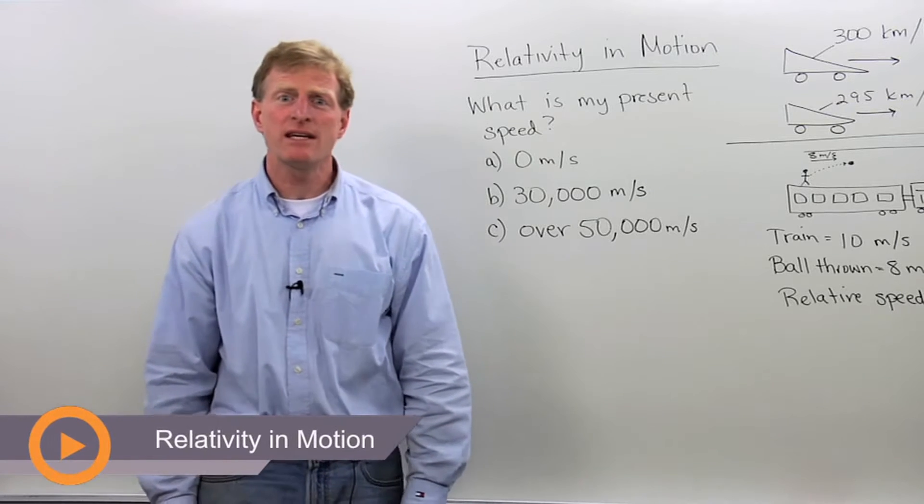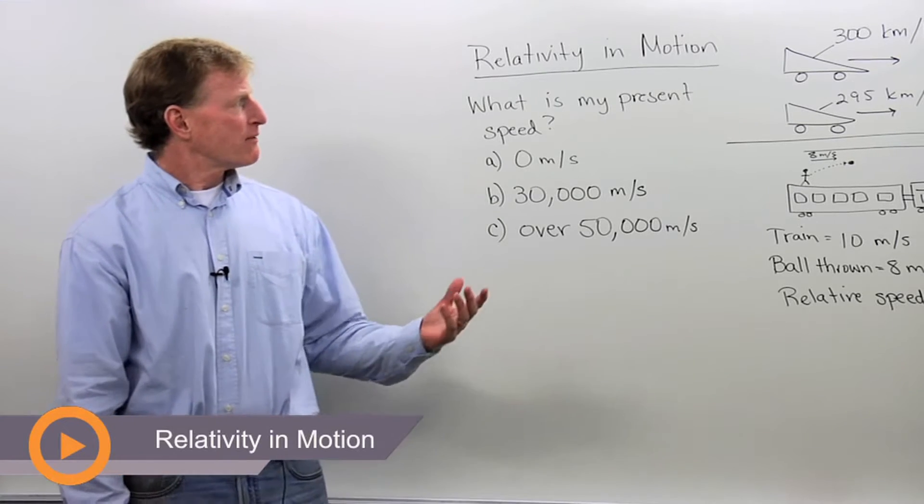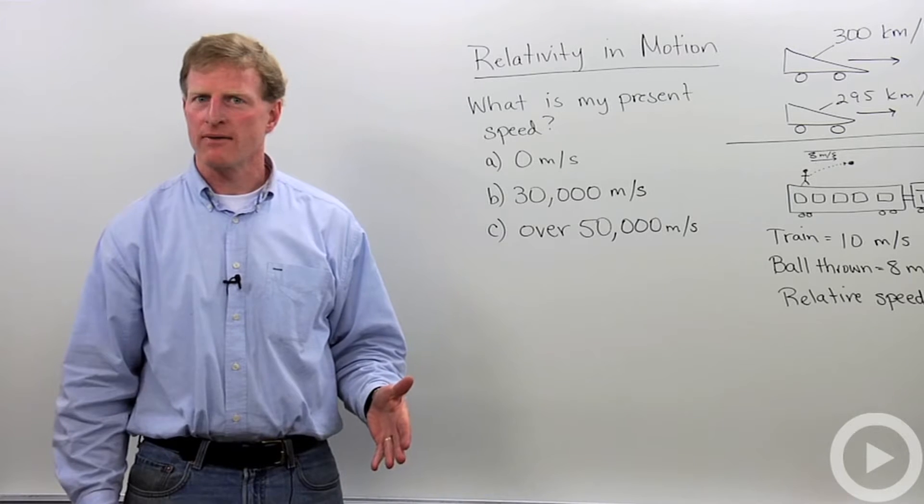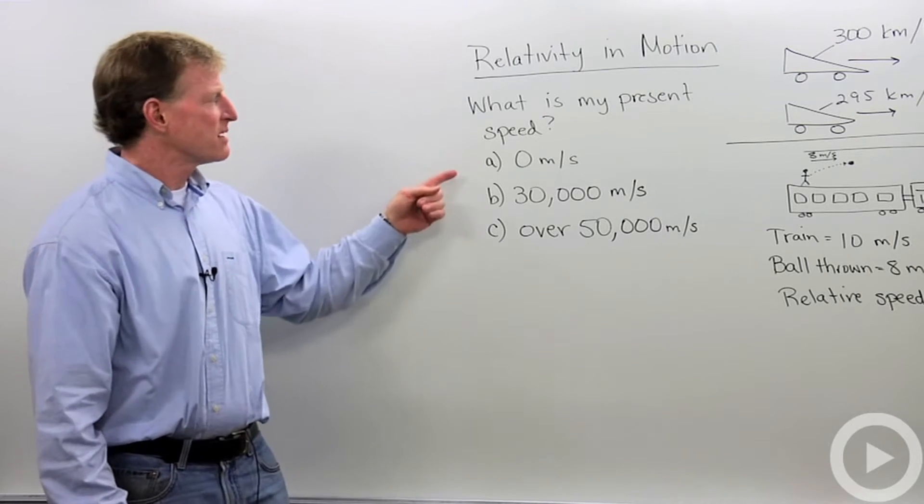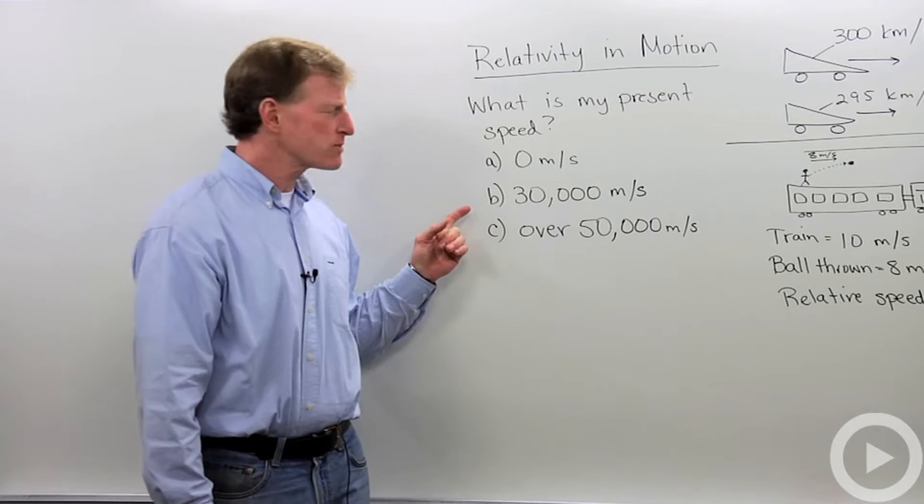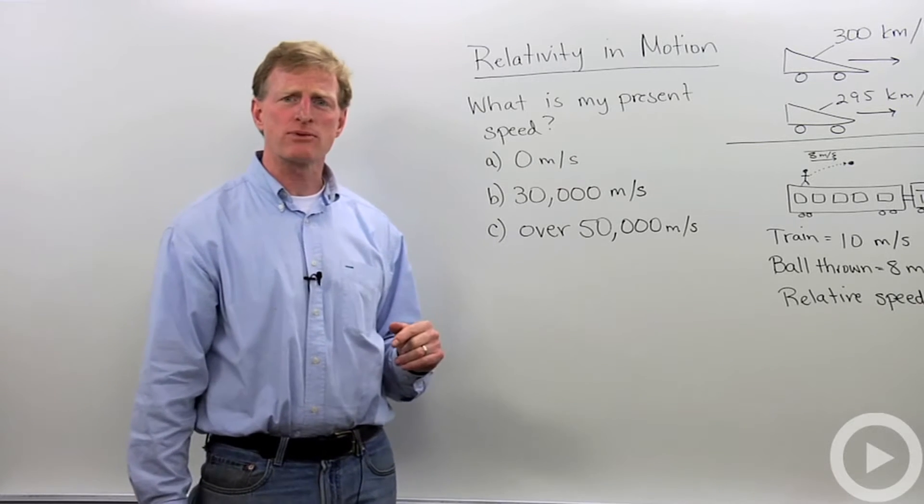Today we're going to talk about relativity in motion. First question for you: what is my present speed right now where I stand? Go ahead and think about that one. I'll give you some choices. Is it 0 meters per second? Is it 30,000 meters per second? Or is it over 50,000 meters per second?